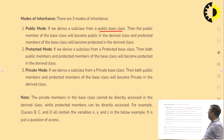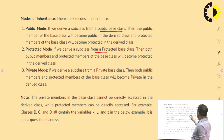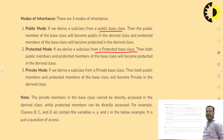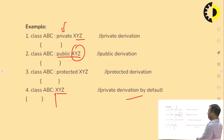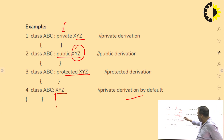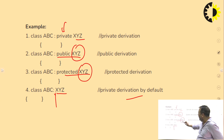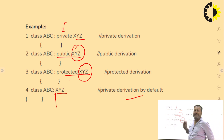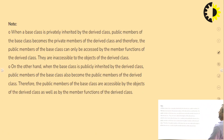In protected mode: if we derive a subclass from a protected base class, then both public and protected members of the base class will become protected in the derived class. So the public and protected of XYZ class will become the protected data of the ABC class.